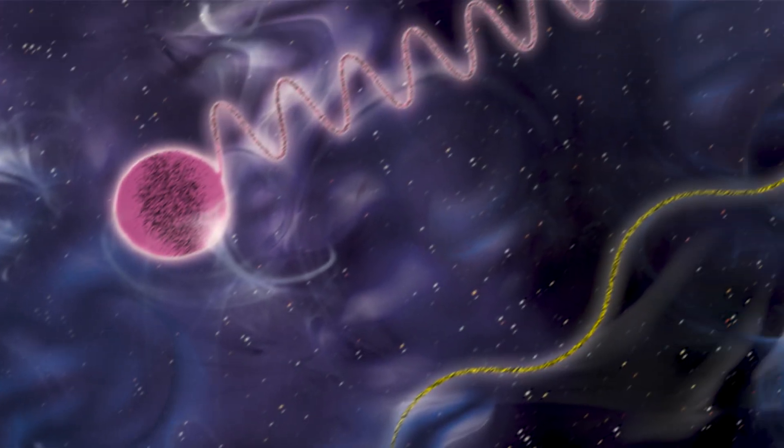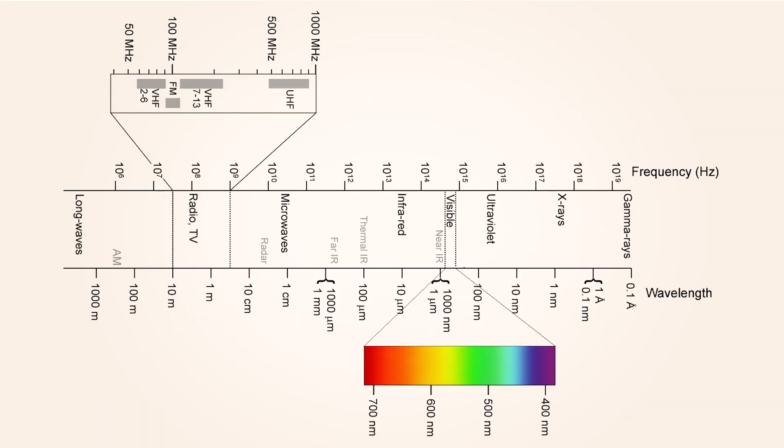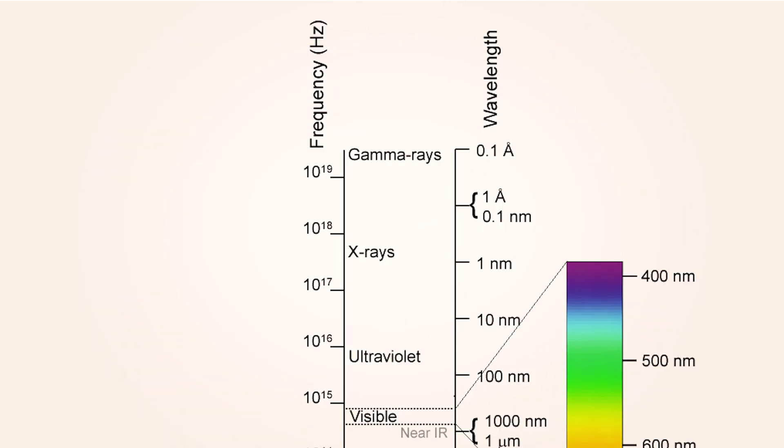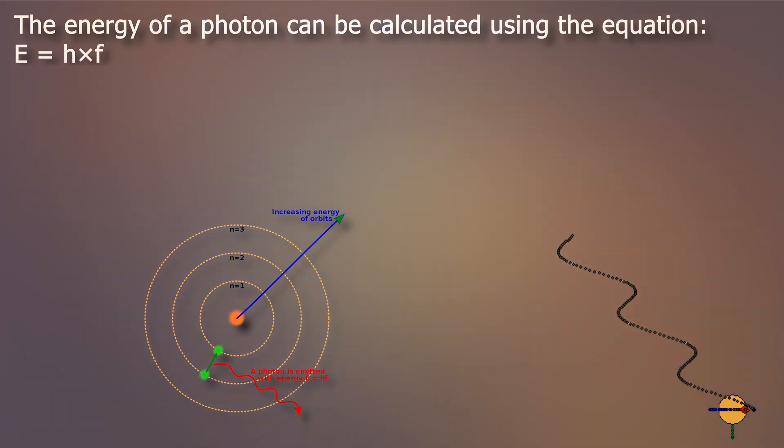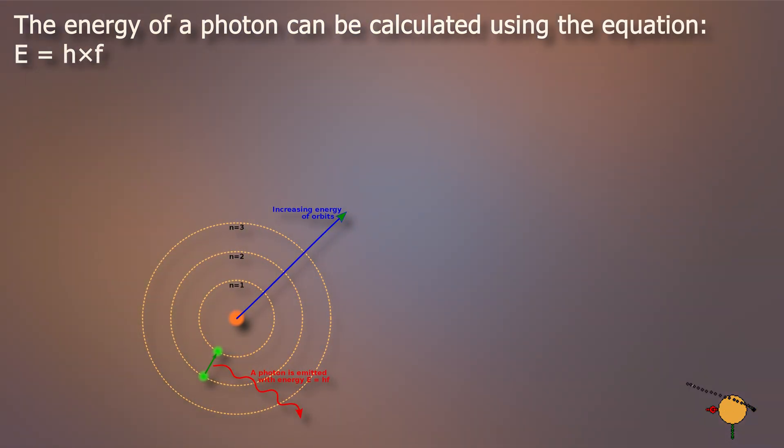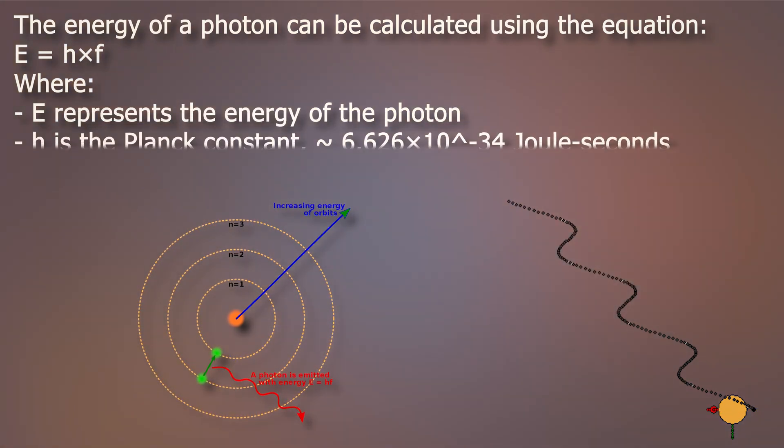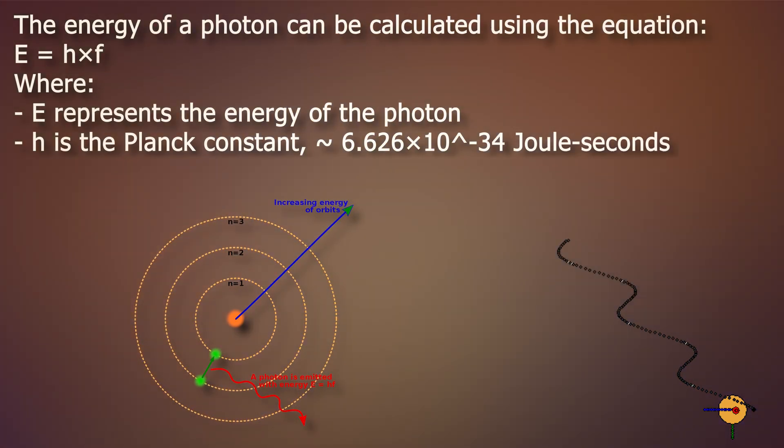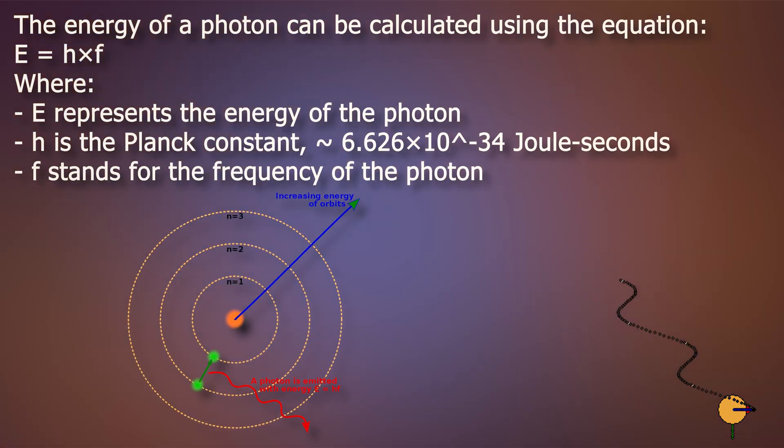These discrete particle-like units of light are denoted as photons, a term applicable to quanta of various forms of electromagnetic energy, including x-rays and gamma rays. The energy of a photon can be calculated using the equation E equals H times F, where E represents the energy of the photon, H is the Planck constant which is approximately 6.626 times 10 to the minus 34 joules seconds, and F stands for the frequency of the photon.